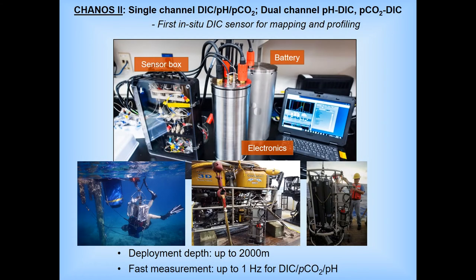Since then, we have been developing CHANNELS 2. The new sensor is faster and smaller, and can be deployed on mobile platforms such as ROVs and profilers up to 2000 meters. We also added the capability for measurement of pCO2.